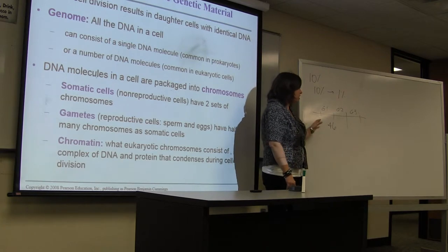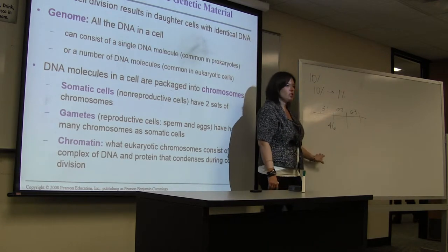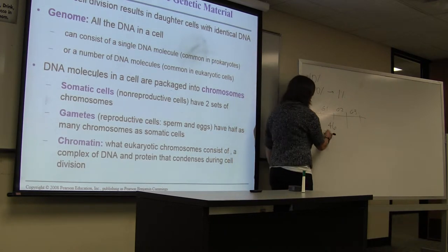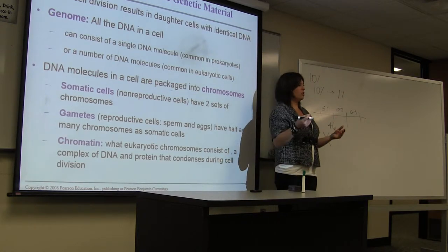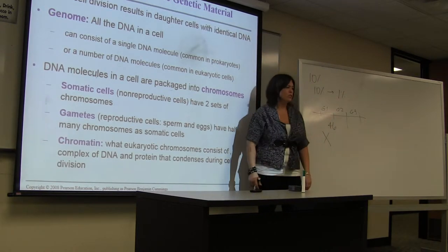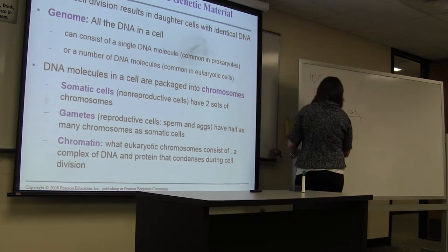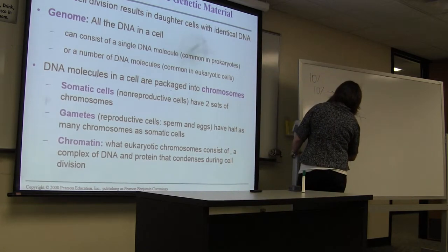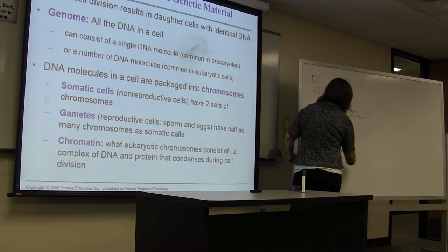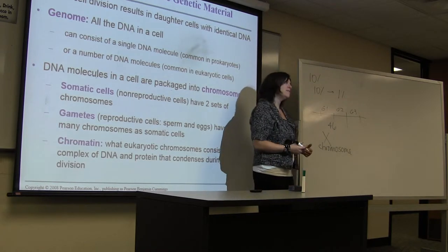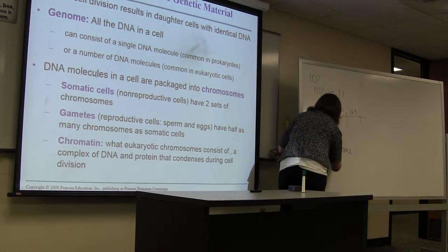These genes are arranged along a chromosome. When you think of a chromosome, most people think of the characteristic X-like shaped chromosome. This is called a chromosome, and this chromosome represents the condensed version of DNA.